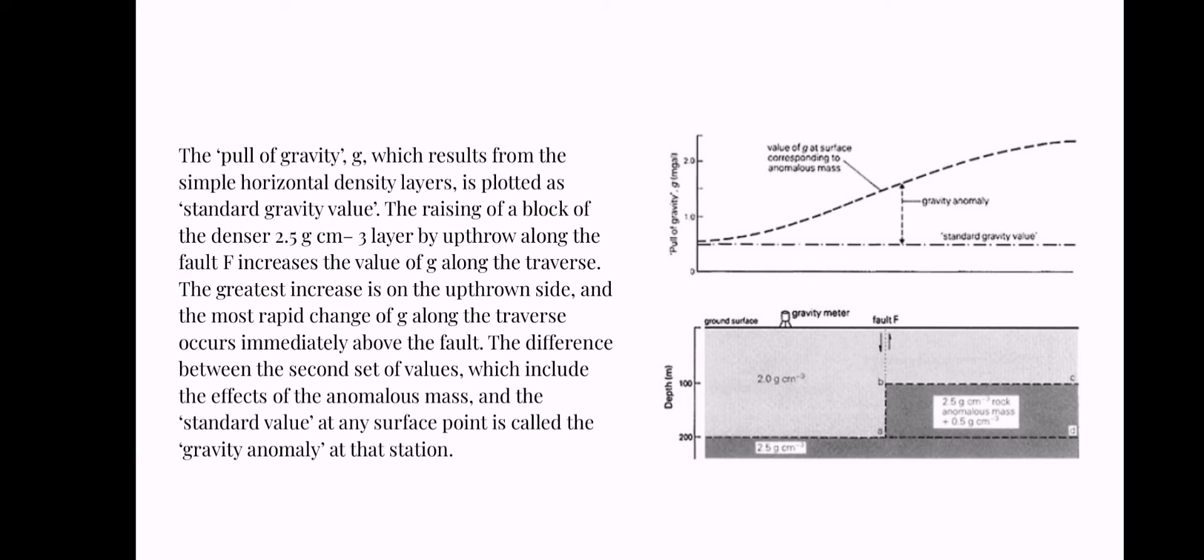The greatest increase is on the upthrow side, and the most rapid change of gravity along the traverse occurs immediately above the fault. The difference between the second set of values, which include the effects of the anomalous mass, and the standard value at any surface point is called the gravity anomaly at that station.